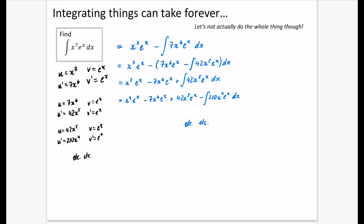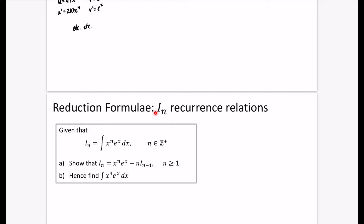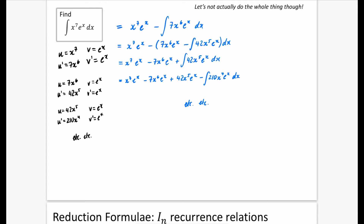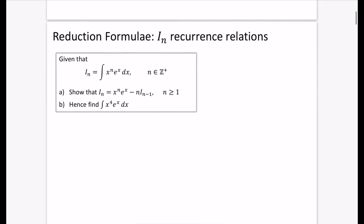We are not going to be able to use the DI method for this particular chapter, because we're not trying to actually do the integration in any quick way. We're trying to do the integration in the particular way they want us to, and that way is by using something called a reduction formula — recurrence relations related to particular integrals that are in terms of n. If you have no idea what I'm talking about with the DI method, you can put it into YouTube — I think it's BlackpenRedpen. But we won't be using that in this chapter.